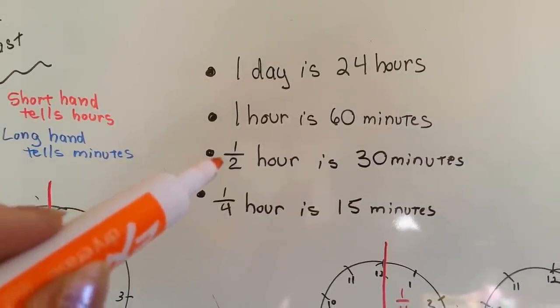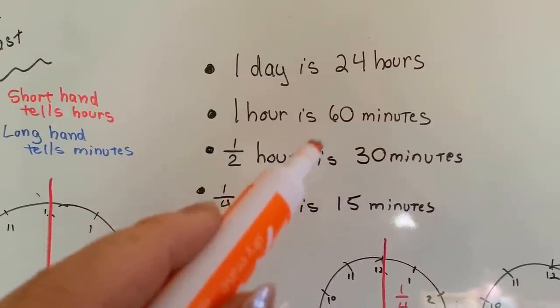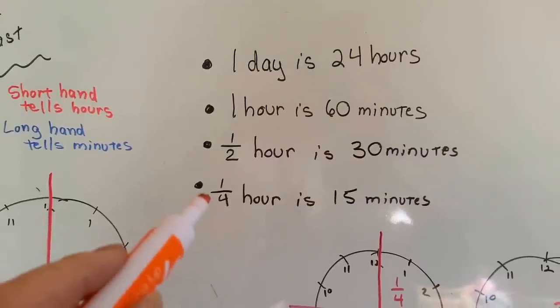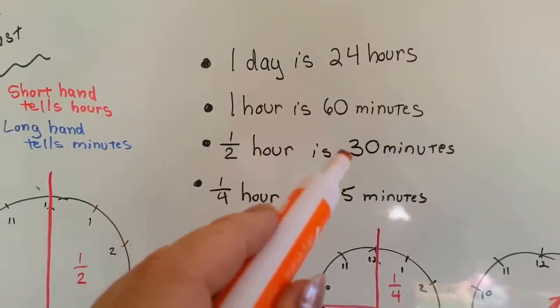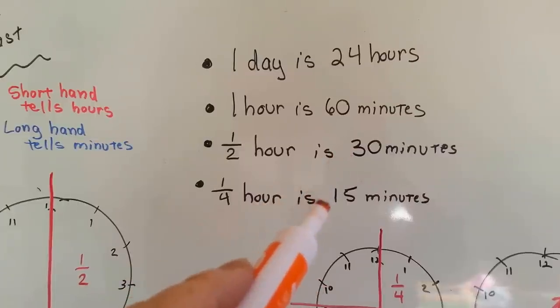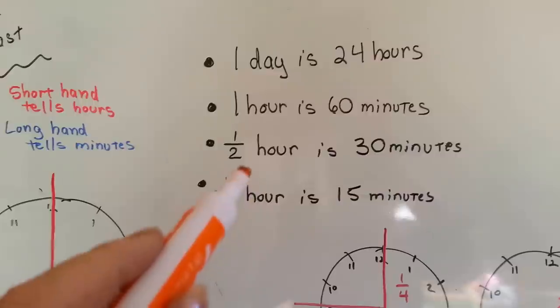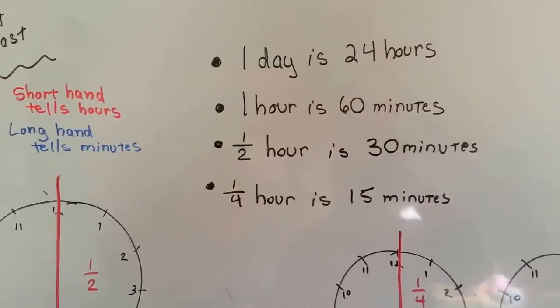So a half of an hour is half of that 60 minutes, it's 30 minutes. A quarter of an hour is 30 minutes divided by 2, which is 15. A quarter hour is half of a half hour. I'm going to show you that.